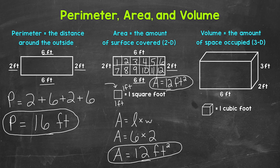Now volume is the amount of space occupied by a three-dimensional, or 3D, shape. So we are moving from area, which is two-dimensional or flat, to volume, which is three-dimensional. Instead of square units like we used for area, we measure volume in cubic units. For our example, we have a rectangular prism and we are working with feet. A cubic foot is a one foot by one foot by one foot cube.